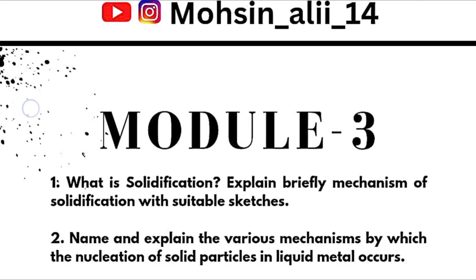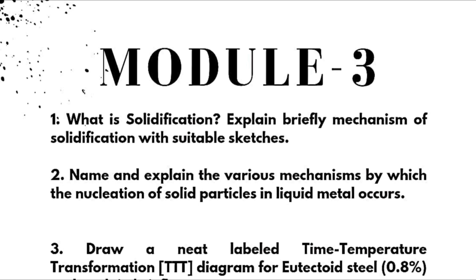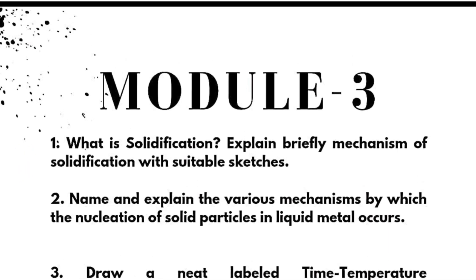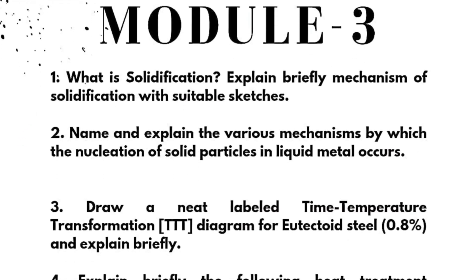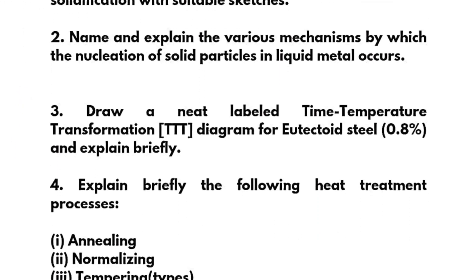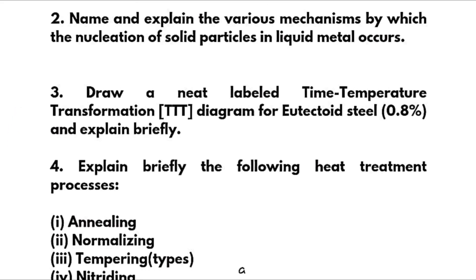Coming to Module 3, which is again a passing module. First: what is solidification — explain briefly the mechanism of solidification with suitable sketches. Second: explain the various mechanisms by which nucleation of solid particles in liquid metal occurs. Third: draw a neat labeled Time-Temperature Transformation (TTT) diagram for eutectoid steel at 0.8% carbon and explain briefly.